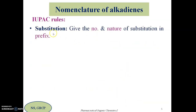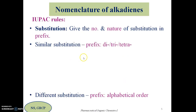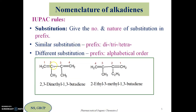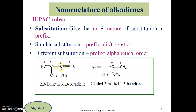The next rule is substitution. After identifying, naming, and numbering the parent chain, we look for substituents. The basic molecule here is 1,3-butadiene but with methyl substitution at positions 2 and 3. We indicate the position of substitution in the prefix. Since both groups are similar, we prefix 'di', giving the name 2,3-dimethyl-1,3-butadiene.